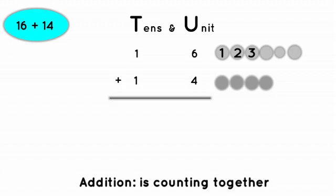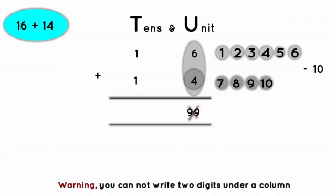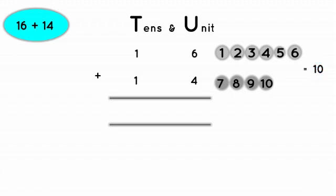1, 2, 3, 4, 5, 6, 7, 8, 9 and 10. Wow. So 6 plus 4 will give us 10. But then we cannot write 2 digits under a column. We can only write 1 digit for each column. Here we have 10. So how many tens can we get from 10? We can get 1 ten, right? So write the 1 under tens. We have 1 ten. And then 0, 0 unit. Write 0 on the unit.